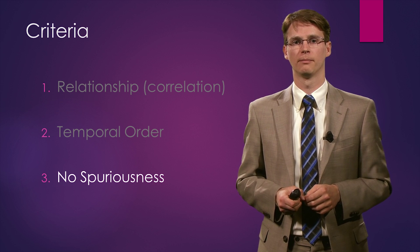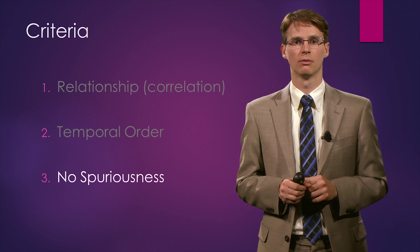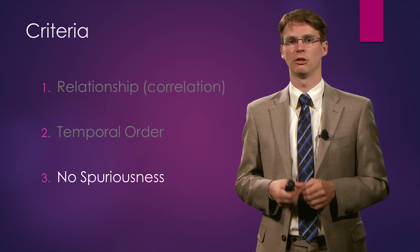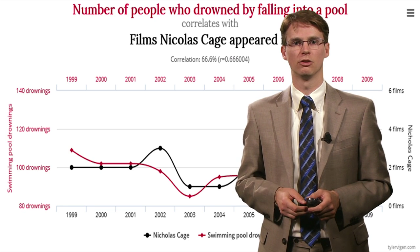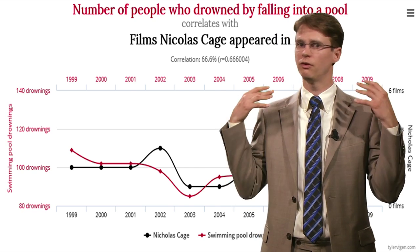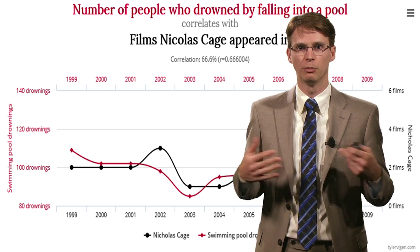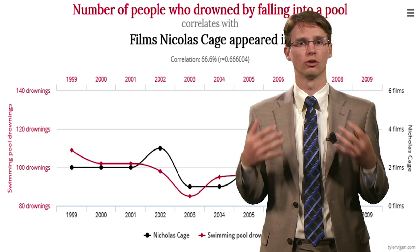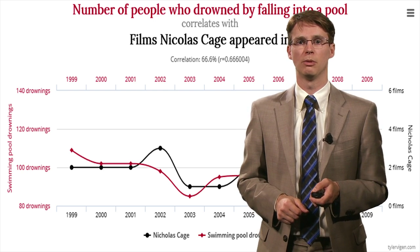The third criterion is spuriousness, and there are two ways a relationship can be spurious. One is that the relationship is based on coincidence. For example, there's a very strong relationship between the number of movies Nicolas Cage appears in and the number of people who drown by falling into a pool. No serious person would conclude there's a causal relationship here — it's based on coincidence.